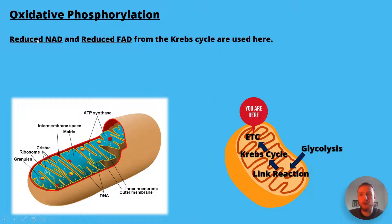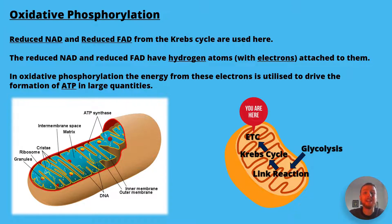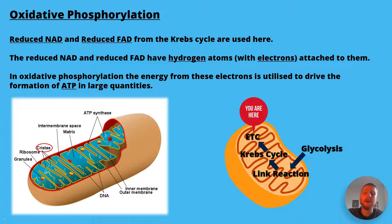Oxidative phosphorylation involves reduced NAD and reduced FAD from the Krebs cycle. The reduced NAD and reduced FAD have hydrogen atoms associated with them, and those hydrogen atoms are made up of a proton and an electron. In oxidative phosphorylation, the energy from these electrons is utilised to drive the formation of ATP in large quantities, with a net gain of 32 ATP from aerobic respiration. Hydrogen ions get pumped from the matrix across the inner membrane into the intermembrane space, as shown in this diagram.